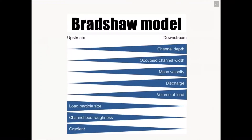Those are just some examples of river characteristics and how they change from source to mouth. The Bradshaw model also includes others to consider, like channel depth and channel width. The Bradshaw model is very much GCSE and A-level standard geography, and you might come across it if you're doing a geographical inquiry or a piece of fieldwork.